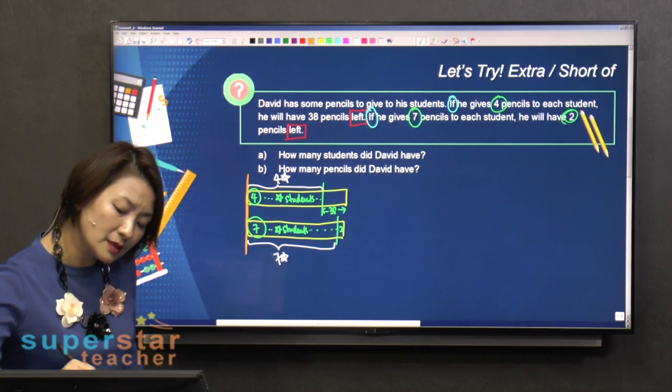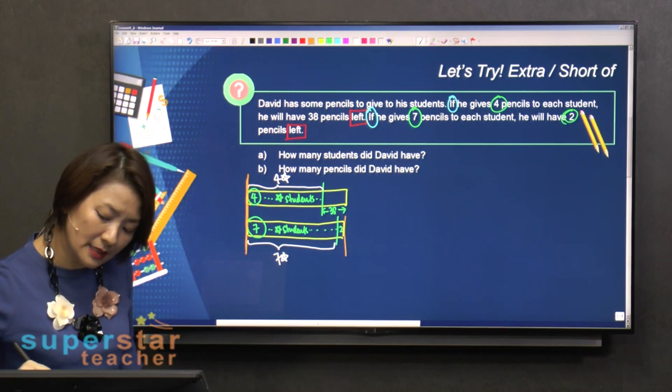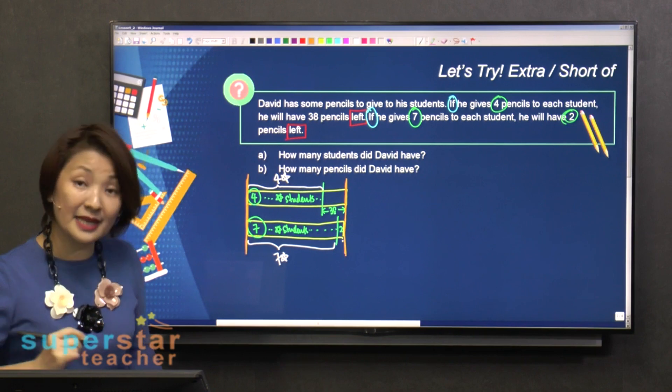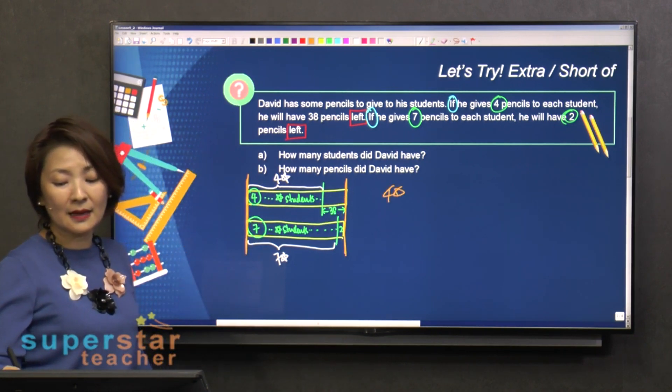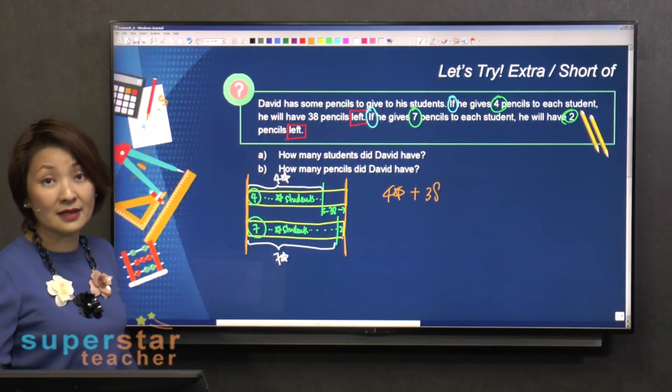Model is always about equal parts, right? This and this, are they equal? Yes, right? Now, how do I form this? It's actually four star plus 38.